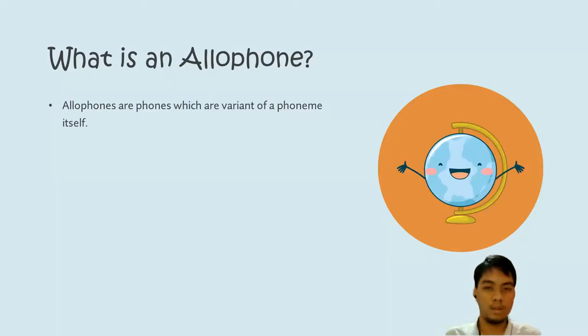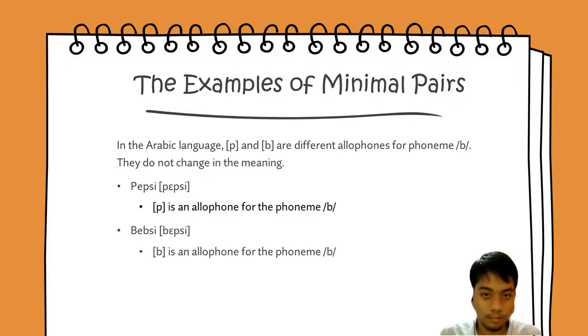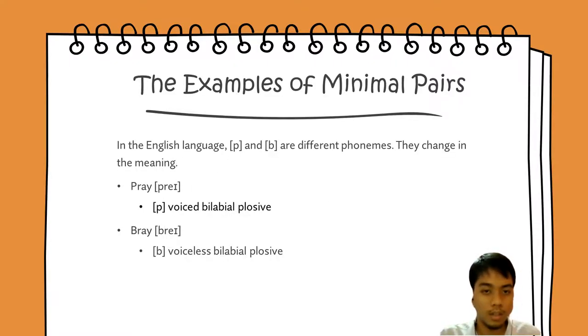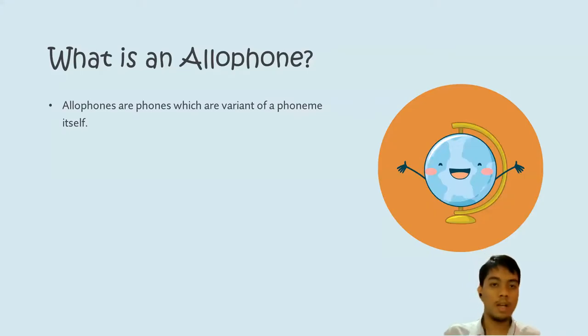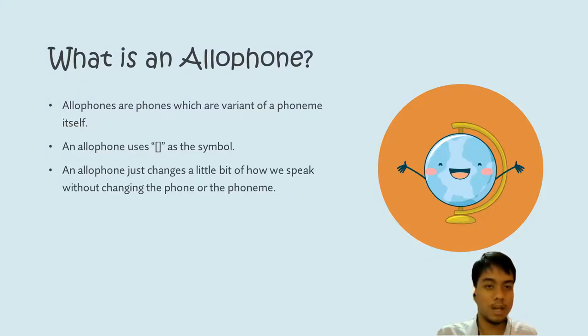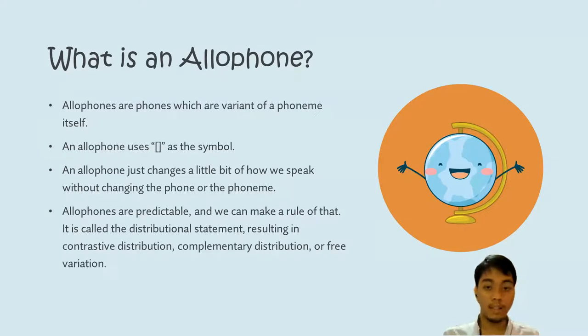After we see an example of allophone, what is an allophone? Allophones are phones which are variants of the phoneme itself. Allophones use square brackets as the symbol. Allophones just change a little bit of how we speak without changing the phoneme. Allophones are predictable, and we can make a rule of that. It's called a distributional statement, resulting in contrastive distribution, complementary distribution, or free variation.